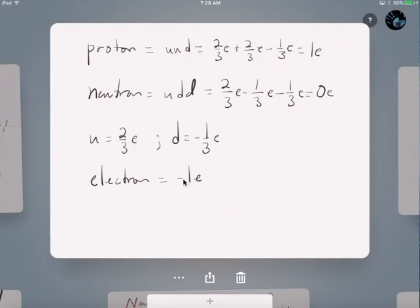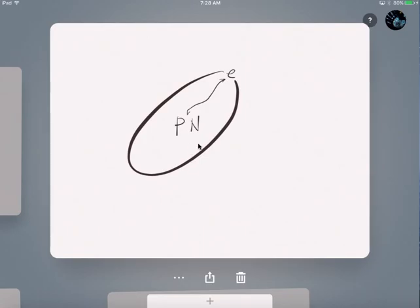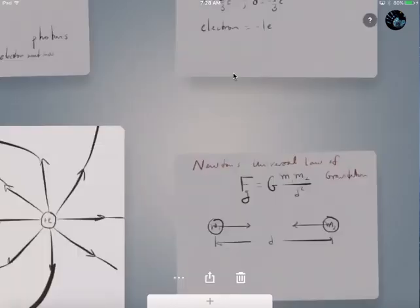These are things that we kind of remember from chemistry class, and then we have our electron, which is just a negative one E. So, I just want to base our atom, our atomic structure on that. So, a proton, neutron, and then an electron. And let's just continue from there.